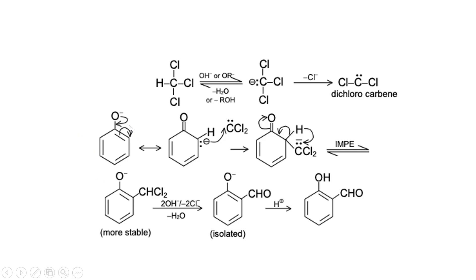This is also one resonating structure of the phenoxide ion. Phenol acts as an acid — after removal of H+, O- is formed. The CCl2 dichlorocarbene, acting as an electrophile, attacks this negative ion. The O- comes to form a double bond, and this double bond shifts, generating a negative charge on the ring carbon, which then attacks the dichlorocarbene.